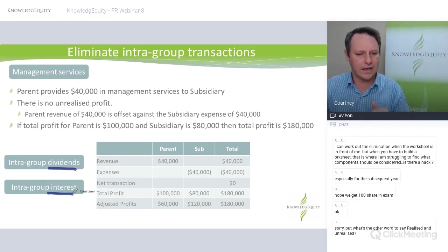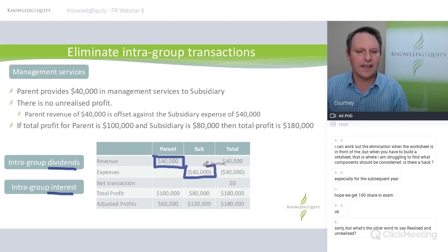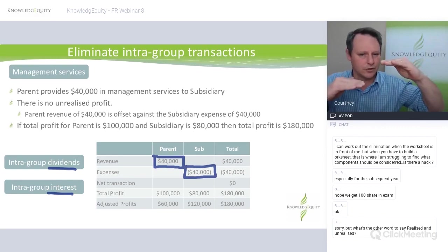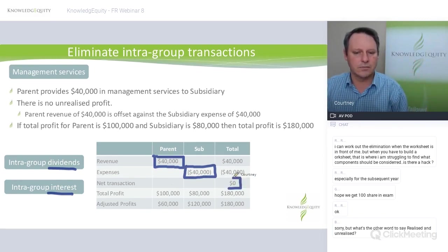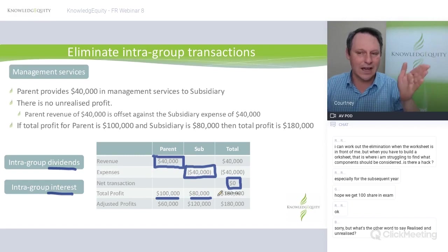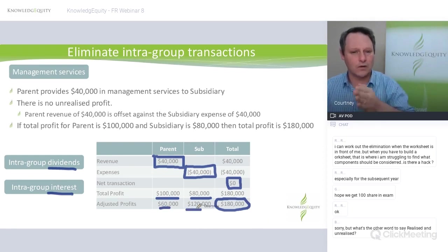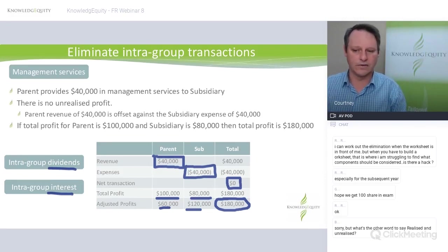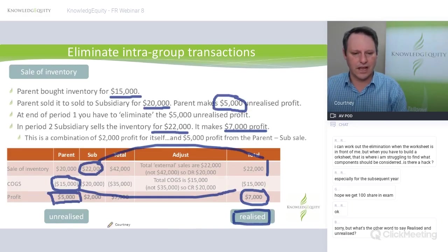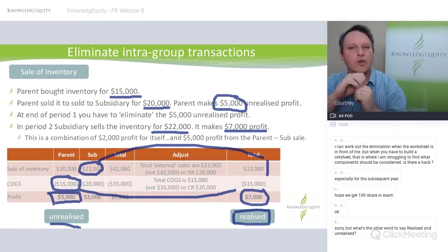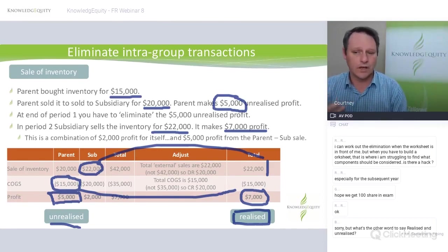For management services, intra-group dividends, and intra-group interest: the revenue on one side is identical to the expense on the other — that's why it's much easier. The total net effect is zero. Much easier to eliminate and adjust than depreciation on assets or inventory. Unrealized means you haven't sold it outside of the group; realized means it's gone outside the group — it's been consumed or used up.